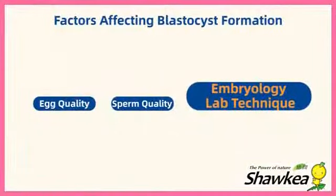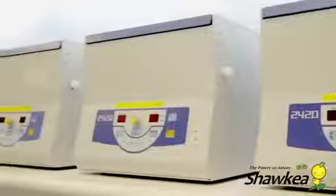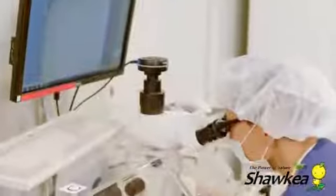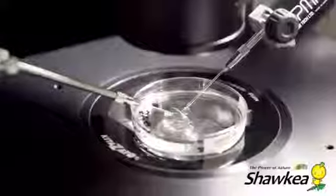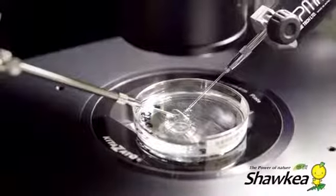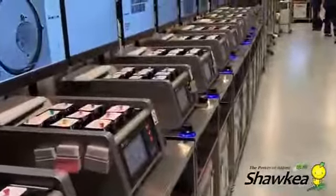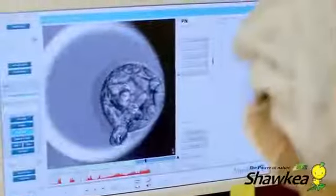Embryology lab technique: The formation of blastocysts requires not only high-quality egg and sperm, but also laboratory culture techniques. For example, the ratio of carbon dioxide and oxygen in the embryo incubator, micro-insemination technology, time-lapse culture system for dynamic and static observation of embryos, etc., may affect the division and development of fertilized eggs.